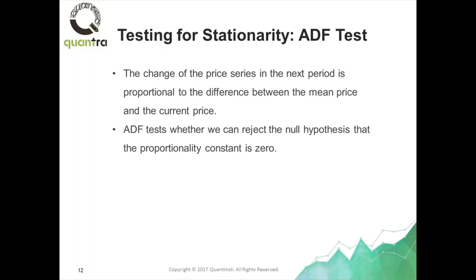You could not predict what the next price change is — it could be positive, it could be negative, it could be zero. But for a stationary price series, it is predictable. In fact, it is going to be negatively proportional. It is going to be negatively proportional to the difference between the current price and the mean price. Or to put it another way, it is proportional to the mean price minus the current price.